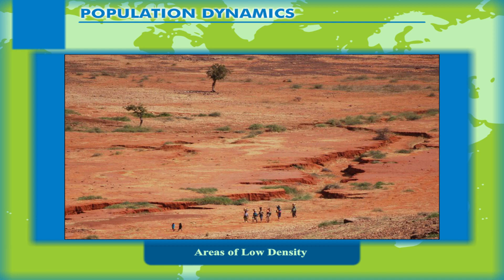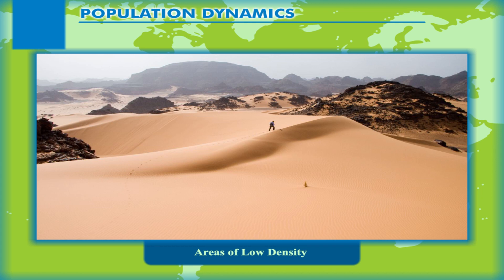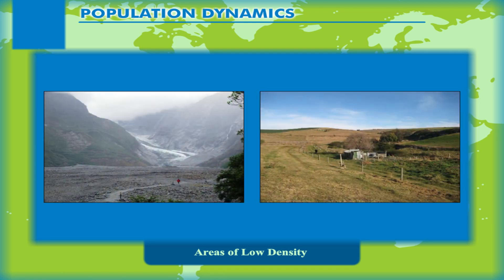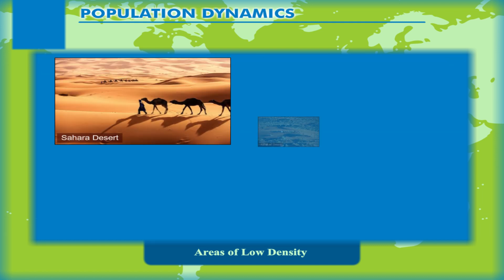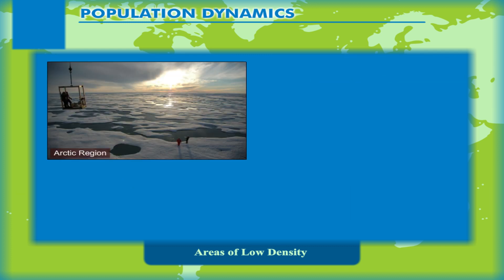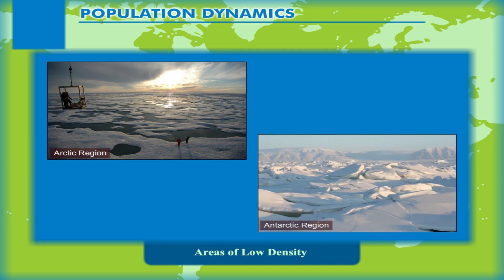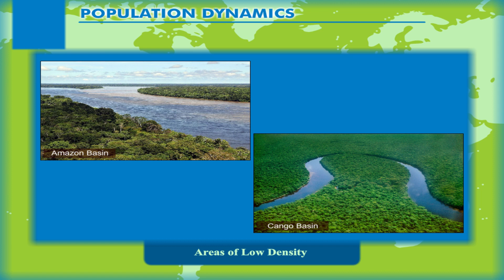Areas of low density are the rough and rugged lands and high mountainous areas. They have harsh climatic conditions — either very hot or very cold, or too wet or too dry — and are therefore not favourable for habitation. Hot deserts such as the Sahara, the Kalahari Desert, the Arabian Desert and the Great Australian Desert are all sparsely populated. The Arctic region, Antarctica, Greenland, the thickly forested Amazon Basin in South America and the Congo Basin in Africa are also sparsely populated areas.